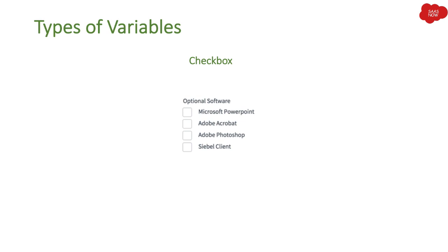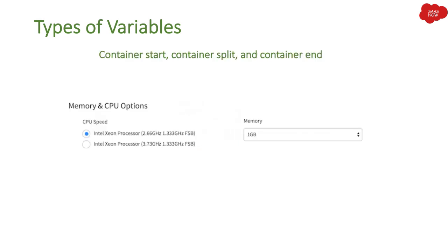The next variable is Checkbox. If you want to give users the opportunity to select checkboxes, you can use the Checkbox variable. For example, if a user is requesting a laptop, you can give them the option to select some default software for that laptop — that is shown as 'Optional Software' and the user can select it.